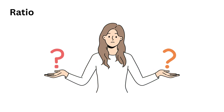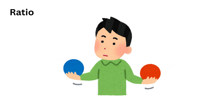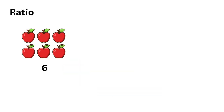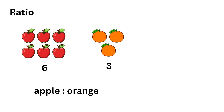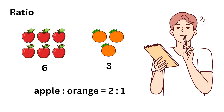A ratio is a way of comparing two or more quantities to show how much of one thing there is compared to another. For example, if there are six apples and three oranges, we can say the ratio of apples to oranges is six to three, which can also be simplified to two to one, and we write it like this. Today let us solve a few problems involving ratios.